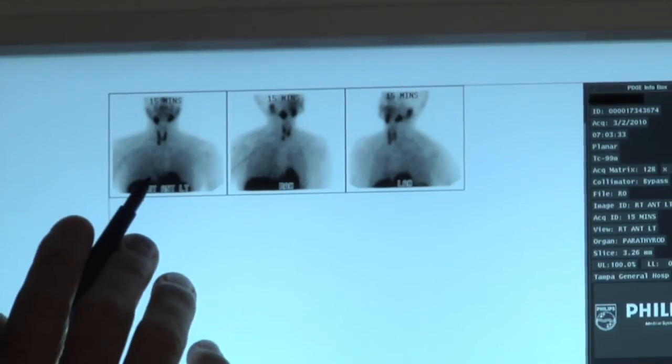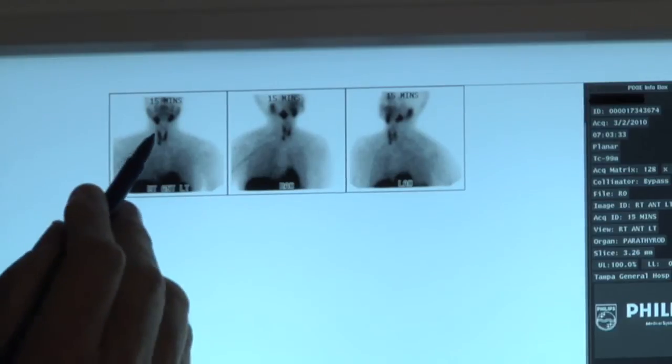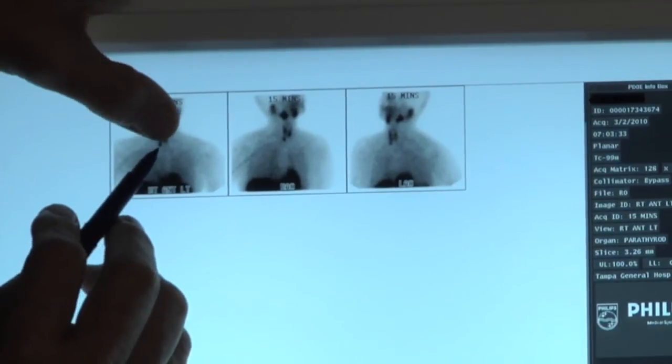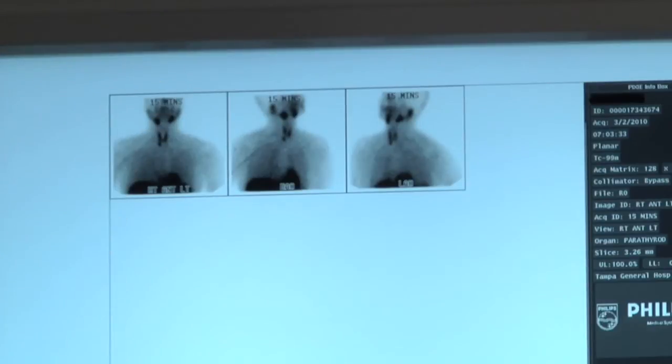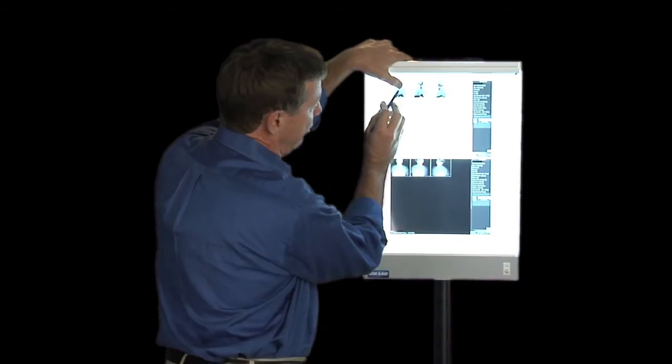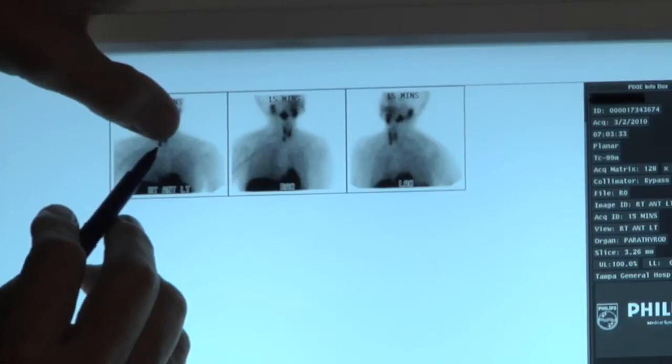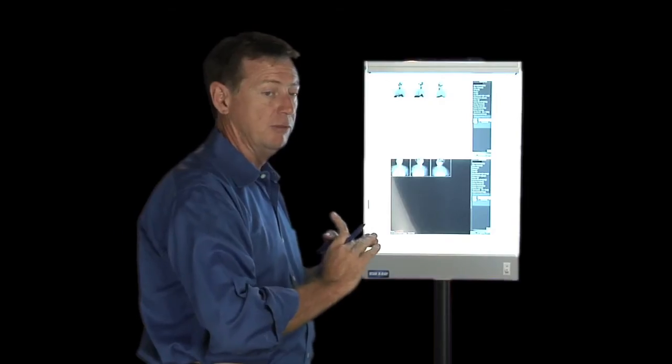So we've talked about some of this before. The parathyroid tumors can be anywhere in this big box. We've discussed that in the past. The butterflies, the thyroid, right there is this patient's parathyroid tumor. A clean, crisp, in-focus scan is what you're looking for.